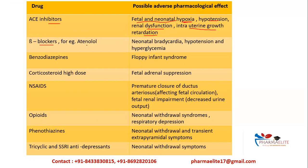Next are beta blockers — for example, atenolol. Beta blockers cause neonatal bradycardia, meaning a decreased heart rate in the newborn (less than 100 beats per minute), which could be dangerous. They also cause hypotension, and hyperglycemia — that is, high blood glucose or sugar levels. All of these can occur if beta blockers are consumed during pregnancy.